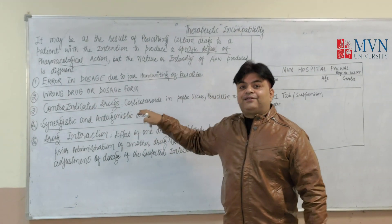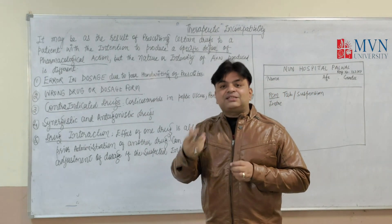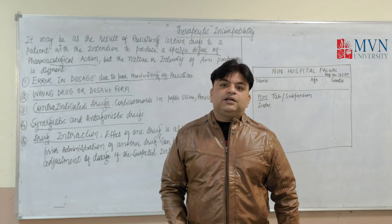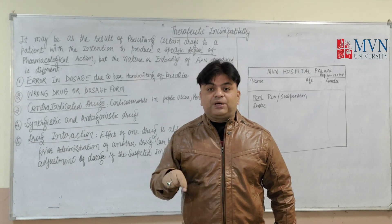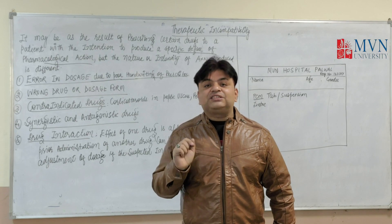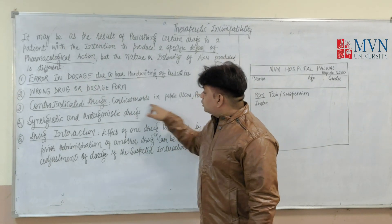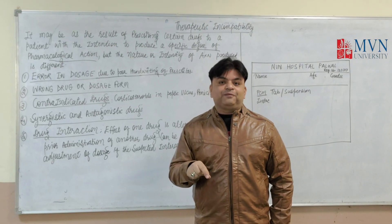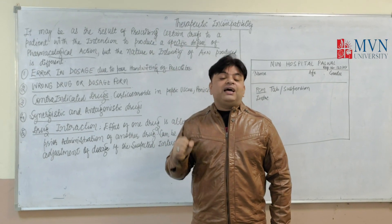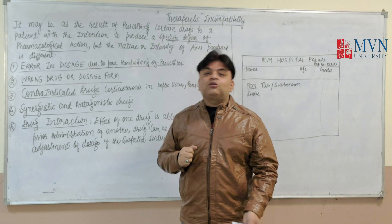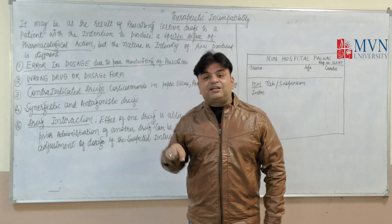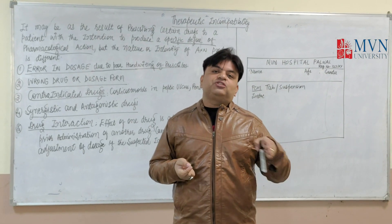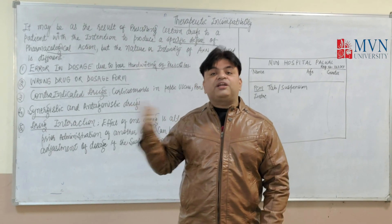Third reason: contraindicated drugs. We take medicines for treatment to get good outcomes for our patients. But when the prescriber does not know the patient's history, there is a chance of error. For example, corticosteroids — if a patient has a peptic ulcer or an allergic reaction already, there is a problem. So we have to focus on the patient's history, and the pharmacist can do good counseling to avoid therapeutic incompatibility.